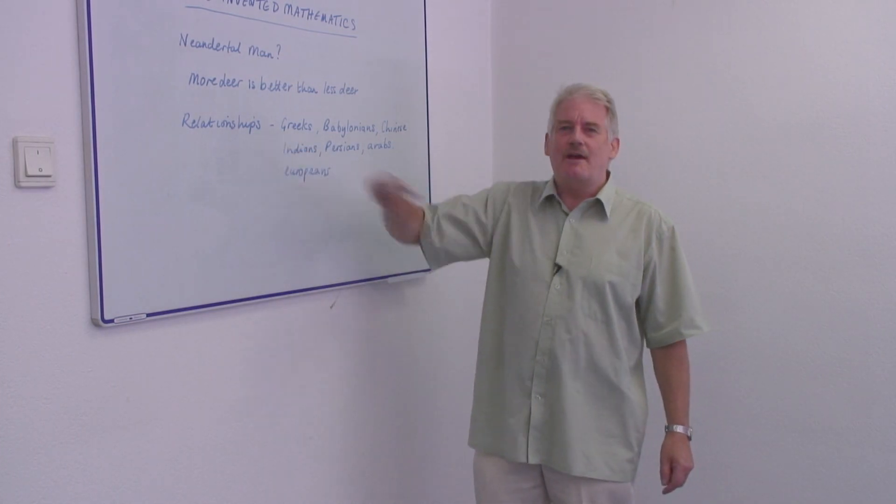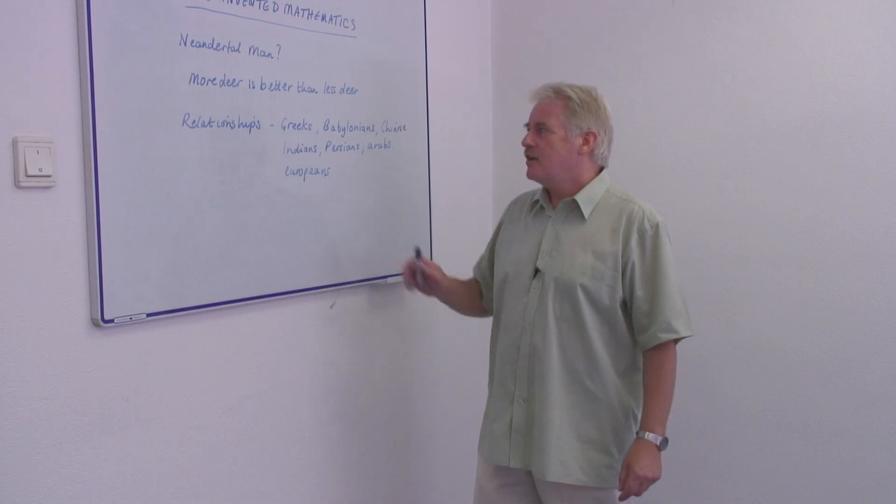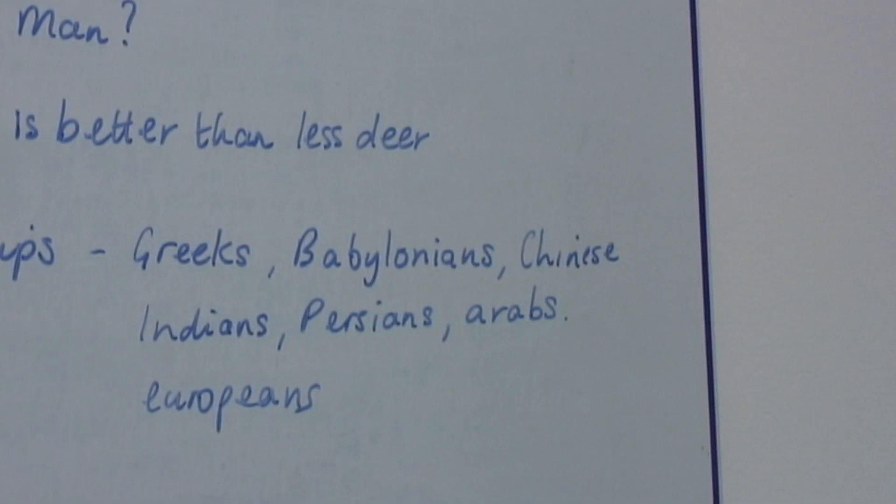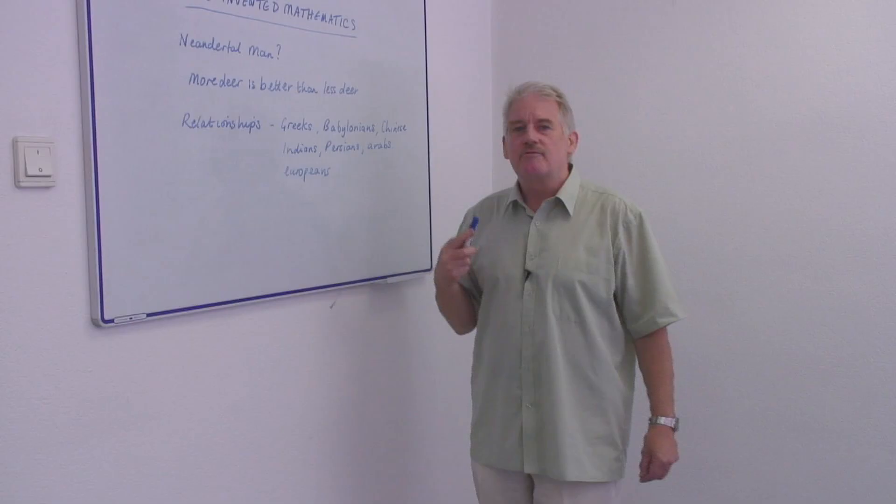Where we are talking about mathematical relationships. And we are sure that the Greeks and the Babylonians, the Chinese, Indians and so on all had systems of number.